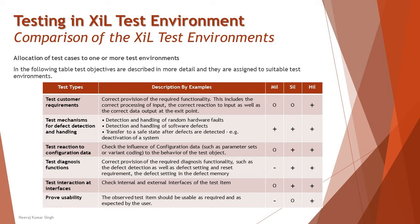Prove usability means the observed test item should be usable as required and as expected by the user. User friendliness is mostly measured from a real-world point of view, so the test environment must be as real as possible to measure usability accurately. In model-based MIL you have limited capability; in SIL you at least have the software, making it possible. HIL is completely closest to the real test environment, so user-related queries and concerns can best be addressed during HIL testing.